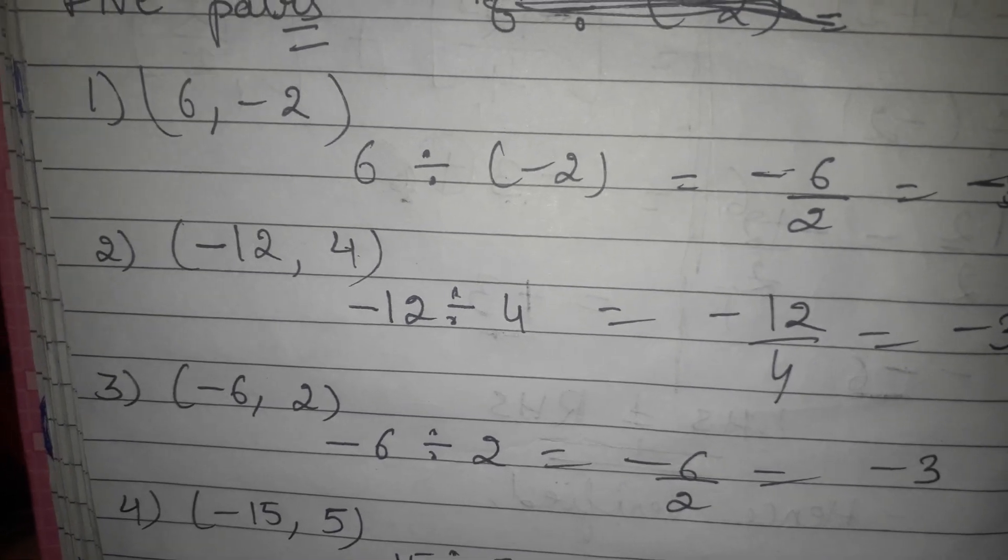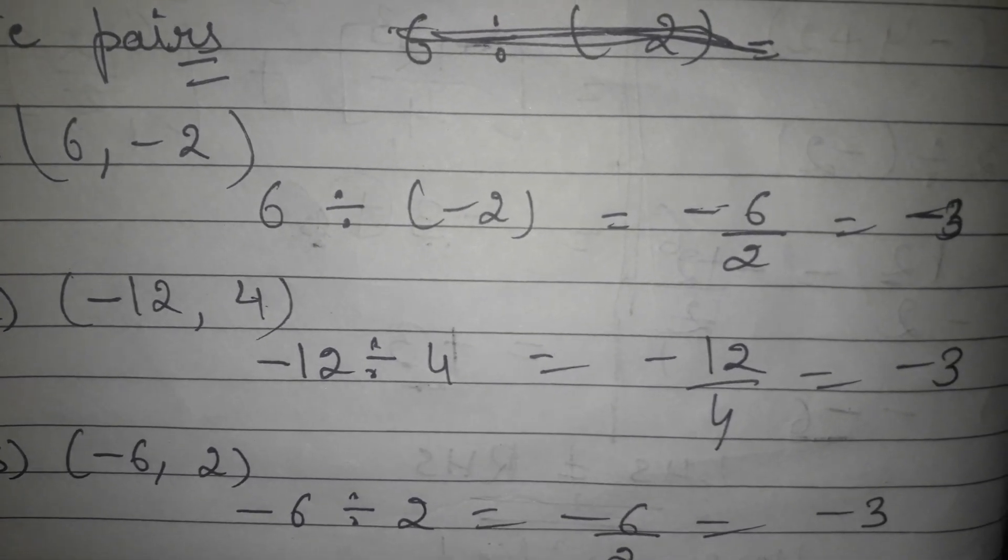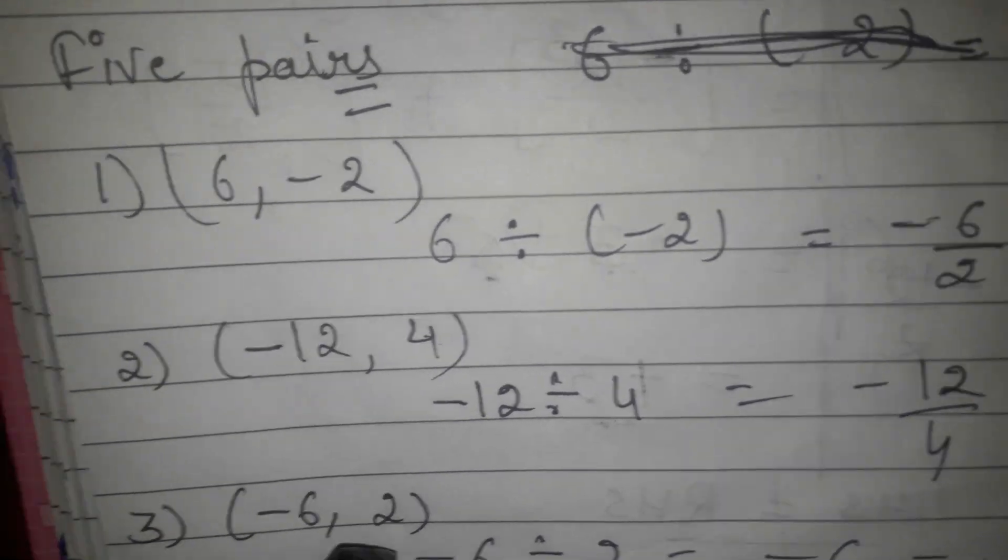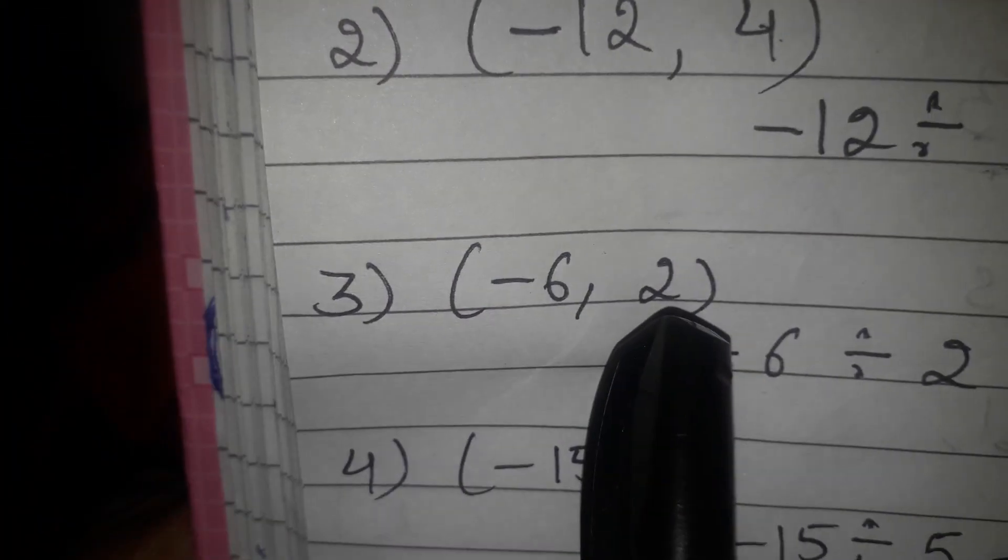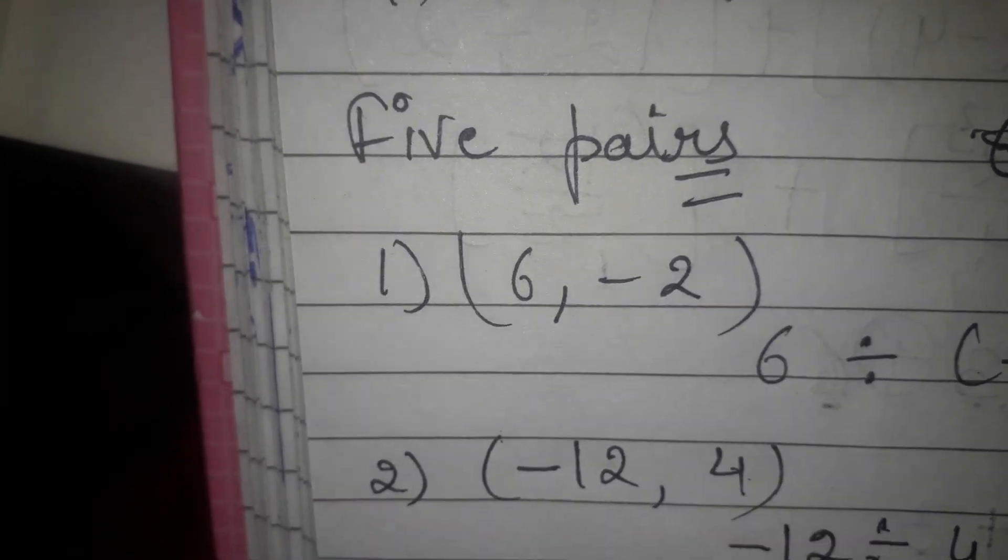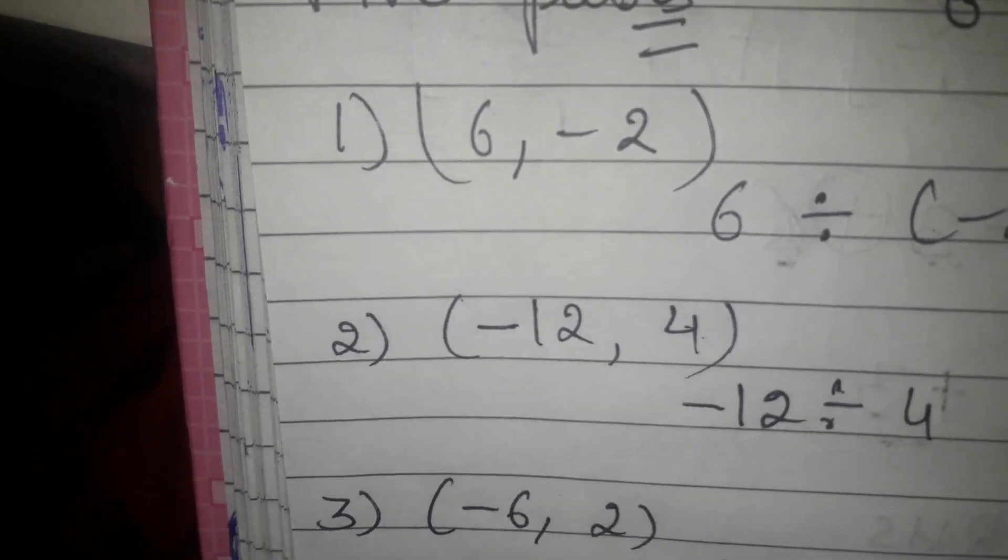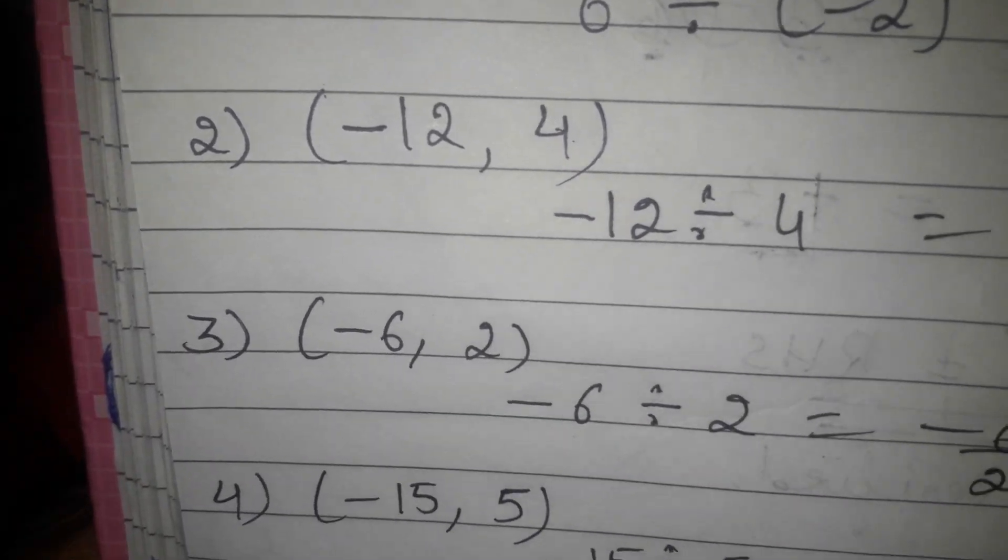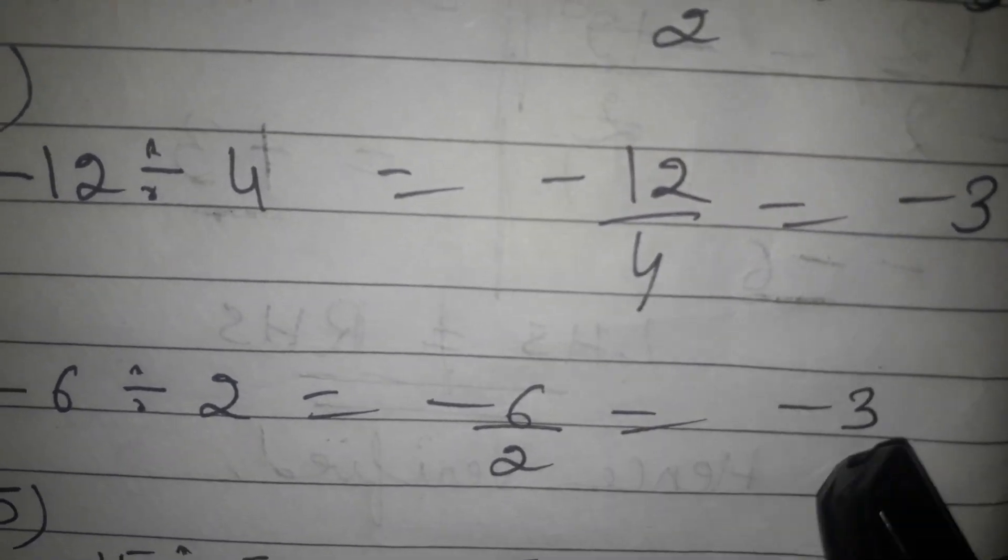You have to choose pairs whose answer will be minus 3. Third pair is minus 6 and 2. First pair was 6 and minus 2. Here third pair is minus 6 and 2. I will divide minus 6 by 2. Again answer will be minus 3.